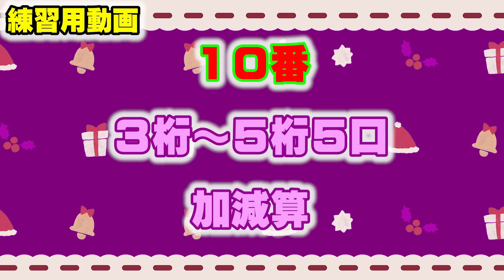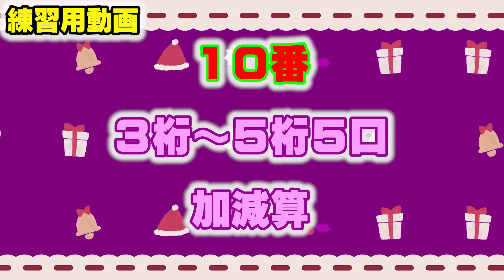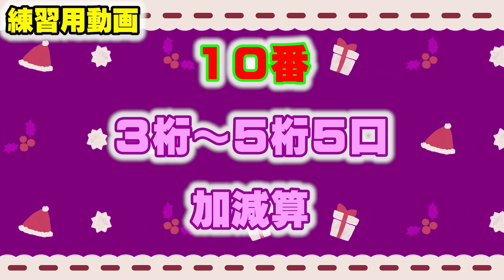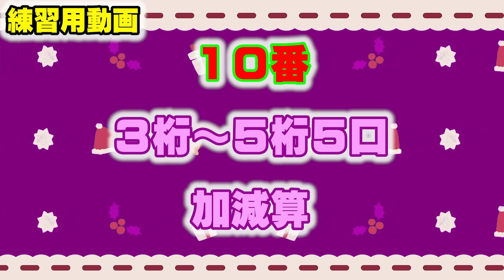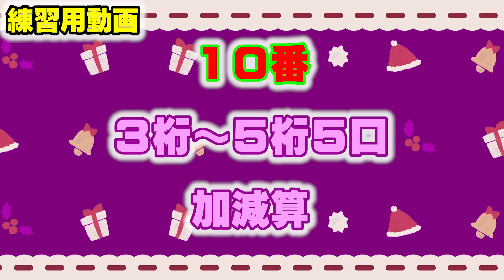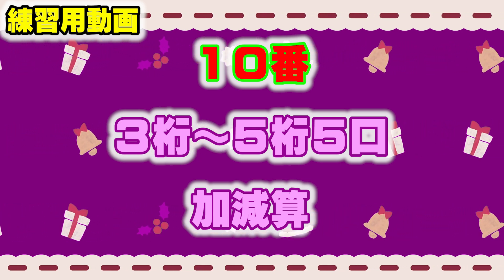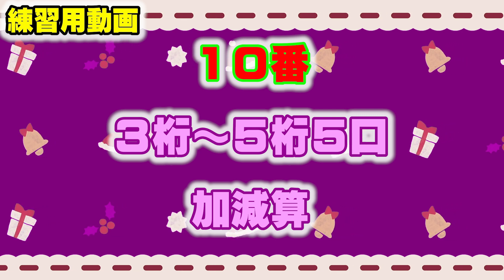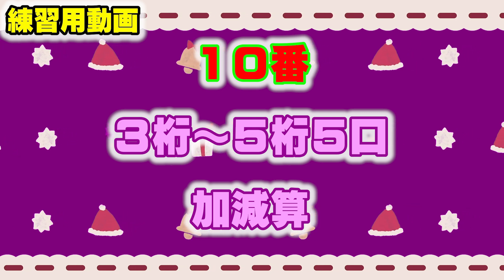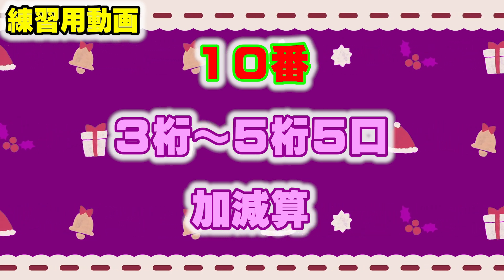問題10: 3桁から5桁、極値、加減算の問題です。Start with 5,534, minus 8,617, minus 209, minus 1,365, minus 29,480. (Problem 10: 3- to 5-digit, extreme value, addition and subtraction problem.)